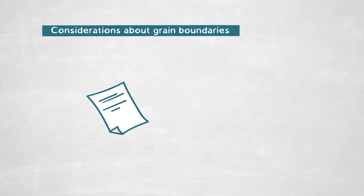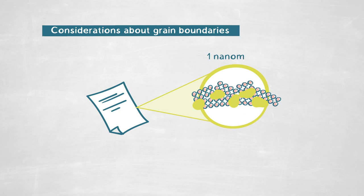The question is: how do we actually observe the atomic structure of these interfaces? There are several problems. You can envision grain boundaries as very confined interfaces — imagine them as a sheet of paper, but confined to one nanometer. That means they are a hundred thousand times thinner than an actual sheet of paper.